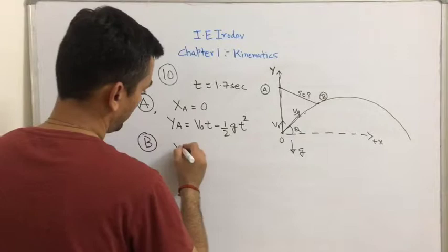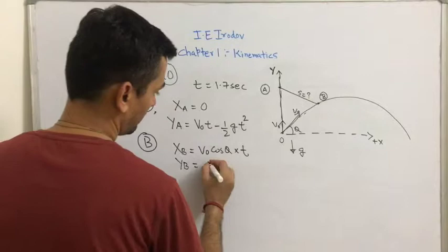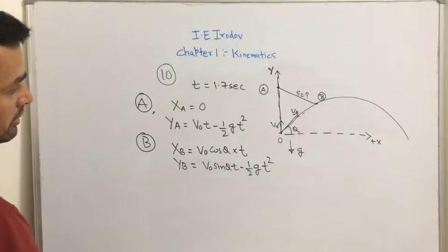And for motion of B, we have the x coordinate will be given by V0 cos theta multiplied by t. And the y coordinate will be given by V0 sin theta into t minus half g into t square.